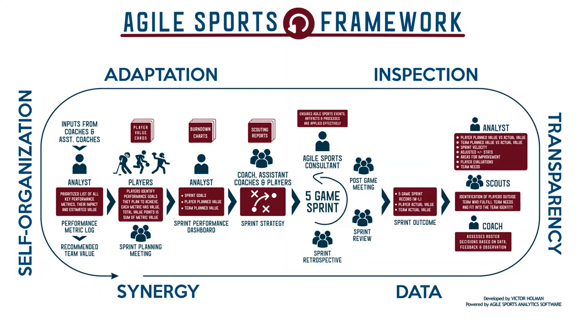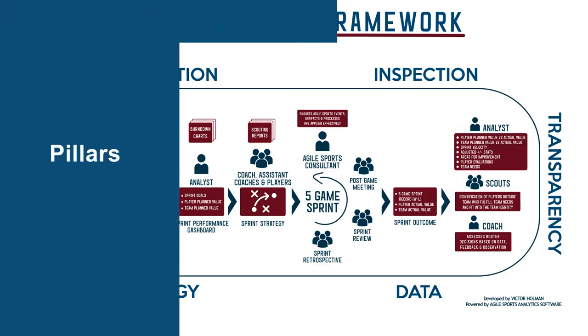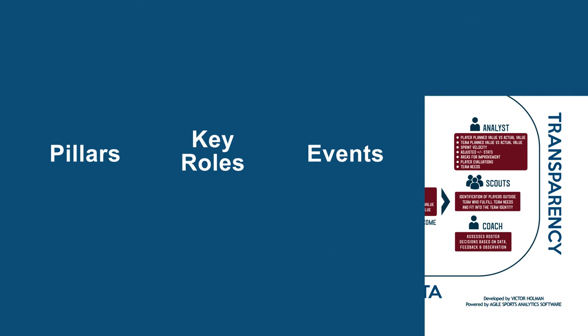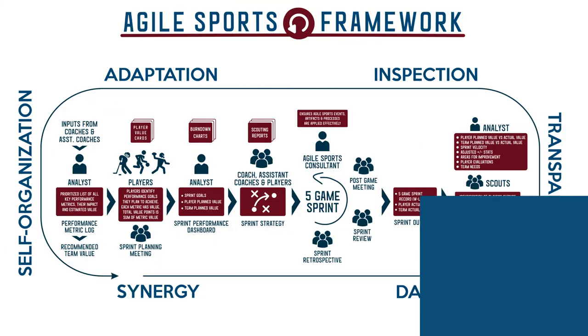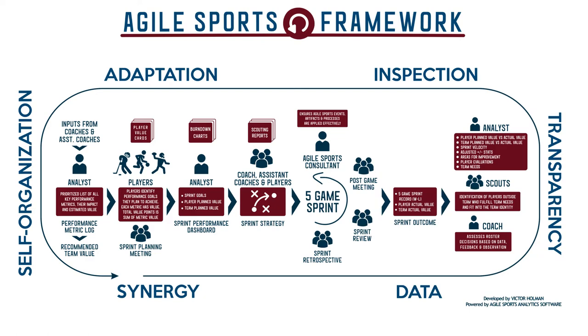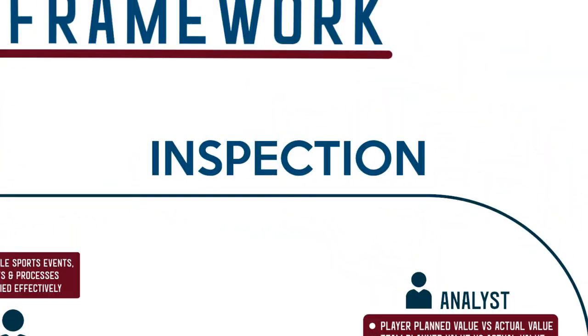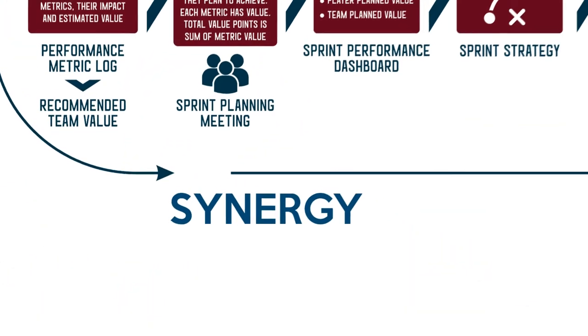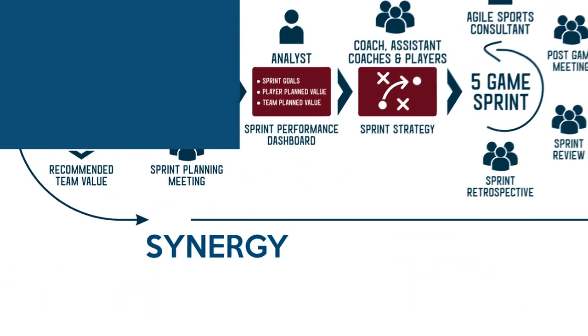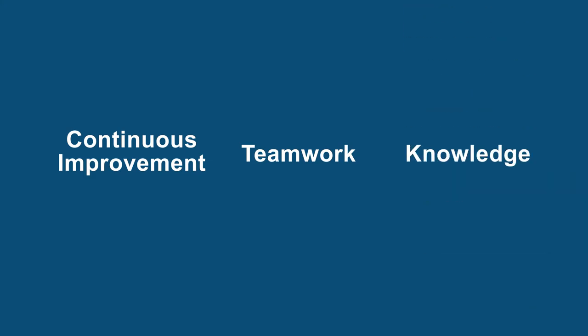The rules of the Agile Sports framework bind together the pillars — the key roles, events, and artifacts governing the relationships and interaction between them. Agile Sports is built on the foundation of six pillars: data, transparency, inspection, adaptation, self-organization, and synergy. All processes are designed to promote continuous improvement, teamwork, and knowledge.